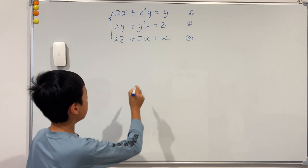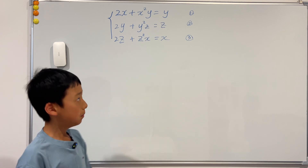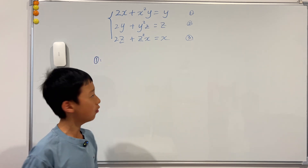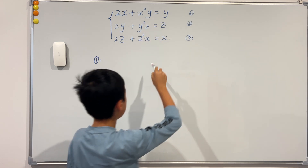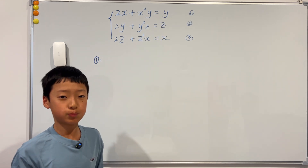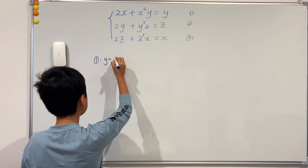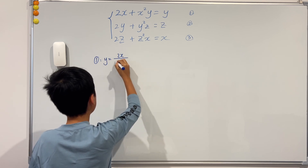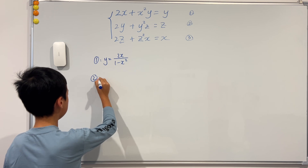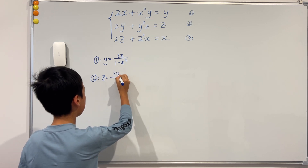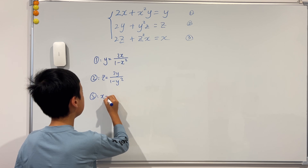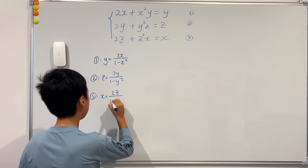What I'm going to do first is look at the first equation, where y is equal to something. I want a different expression of y from the first equation. If we factor out a y and divide the (1 minus x squared) to the left-hand side, we get a different expression. From equation 1, y equals 2x over (1 minus x squared). Similarly, in equation 2, z equals 2y over (1 minus y squared), and in equation 3, x equals 2z over (1 minus z squared).